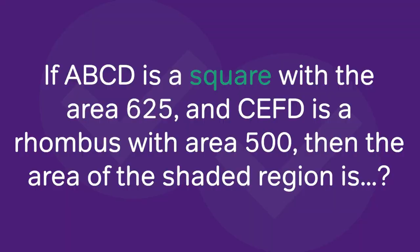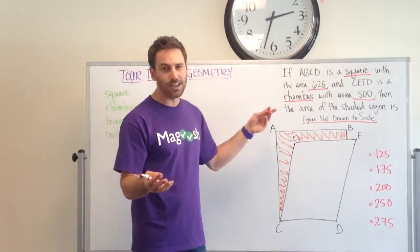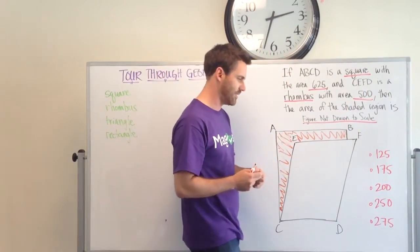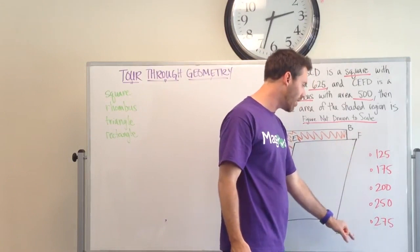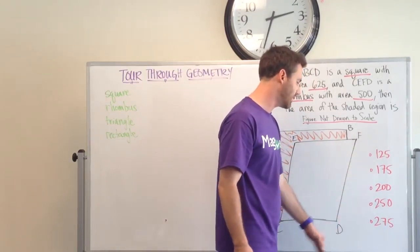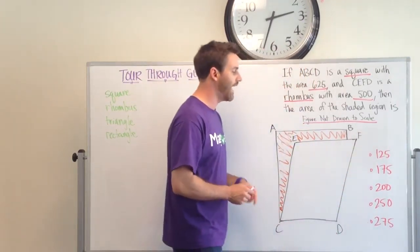Other things we want to notice: we're dealing with a square and we're told the area of it, and we're dealing with a rhombus and we're told the area of that. It's always good to take a quick glance at the answer choices just to see what is here. It's going from smallest to largest, 125 at the lowest end, 275 at the high end.